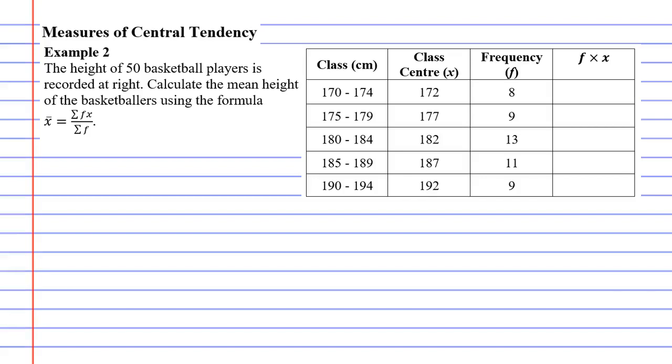Alright, we're on to example 2, which says that the height of 50 basketball players is recorded at right. Calculate the mean height of the basketballers using this formula.